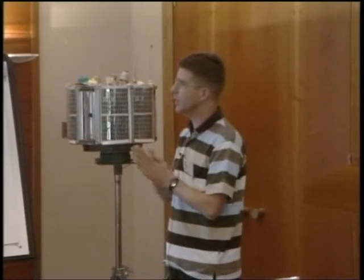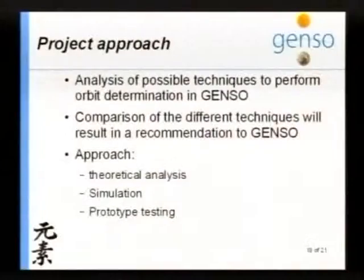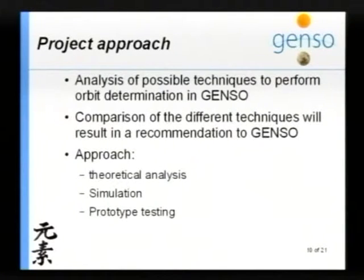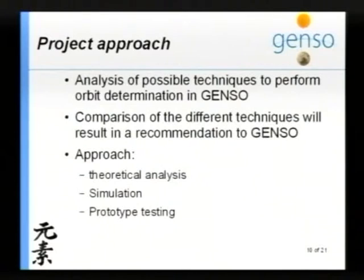So what I'm going to do: I'll make an analysis of possible techniques to perform orbit determination in GENSO, comparing those different techniques to find which is most effective. It will be a combination, I think. I'll first do a small theoretical analysis, then a large simulation, and then some prototype testing with my own ground station or parts of GENSO. The simulation is needed because GENSO is not yet ready for orbit determination — it's almost ready to roll out, but should first focus on its main tasks.